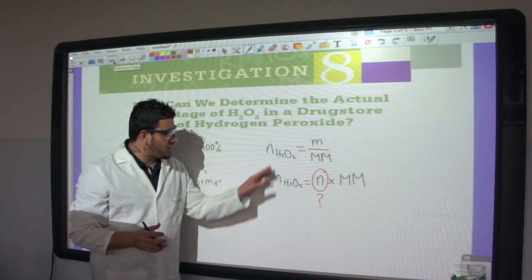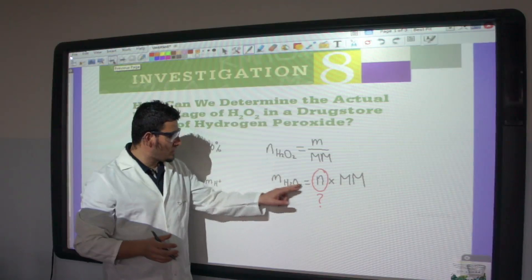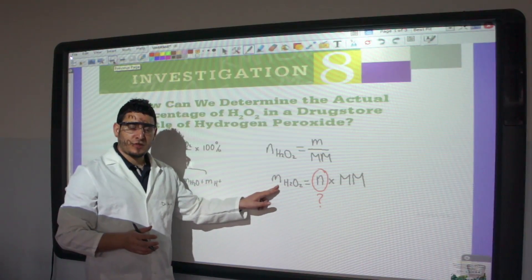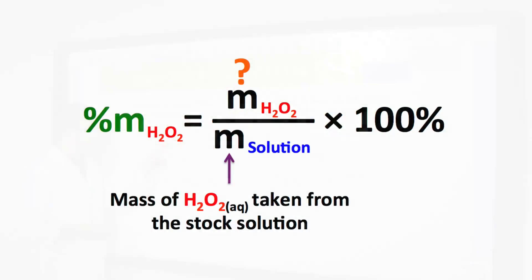Plugging in the molarity and average volume, I can determine the moles of H₂O₂. From the moles, I calculate the mass of H₂O₂ using the molar mass. Dividing by the mass of the solution and multiplying by 100% gives the mass percent of H₂O₂ in the solution.